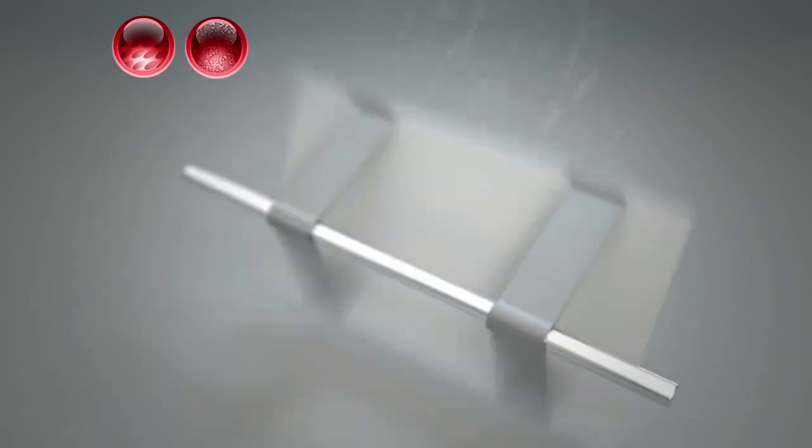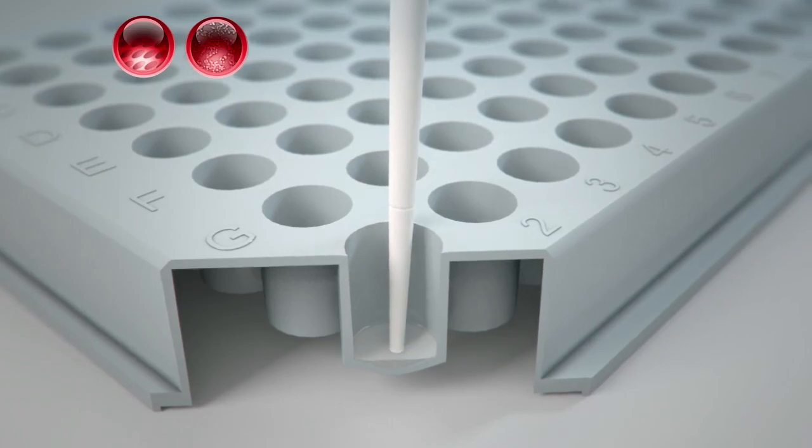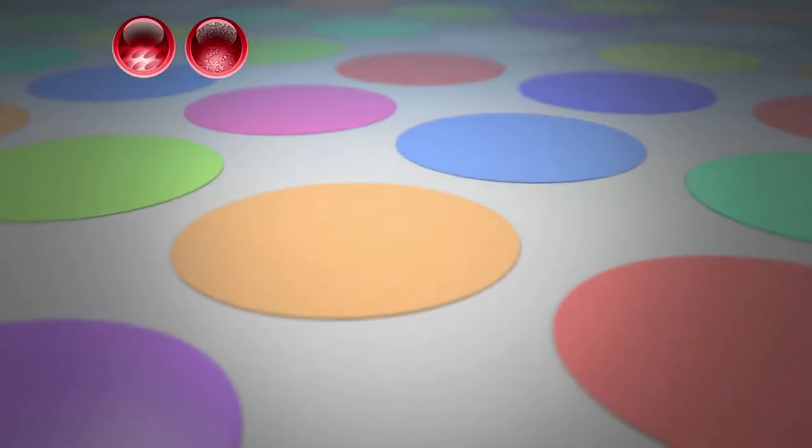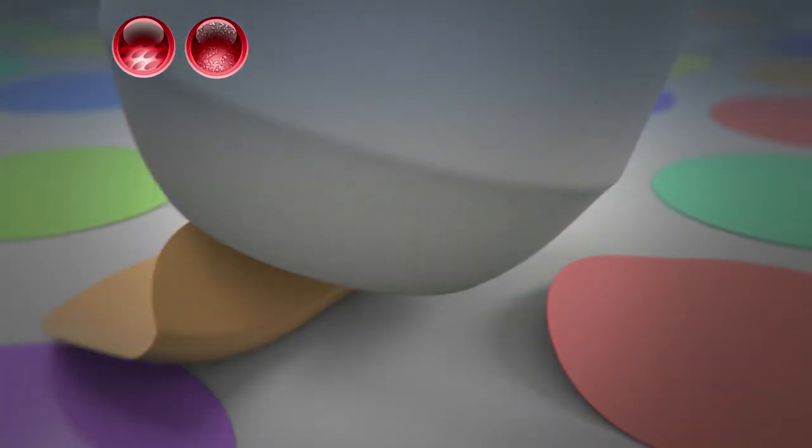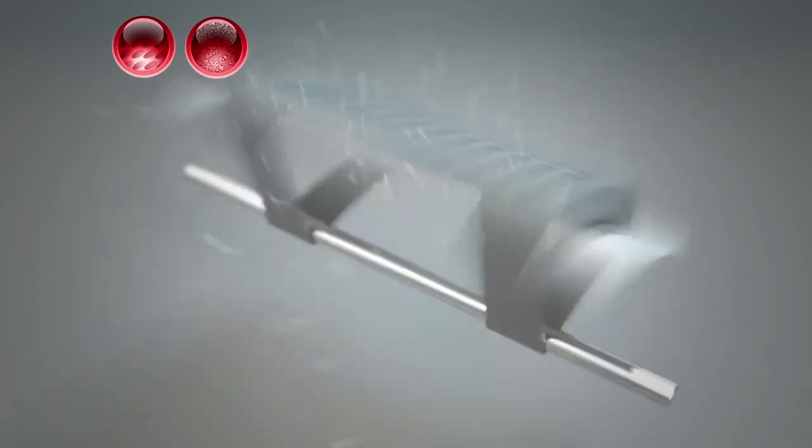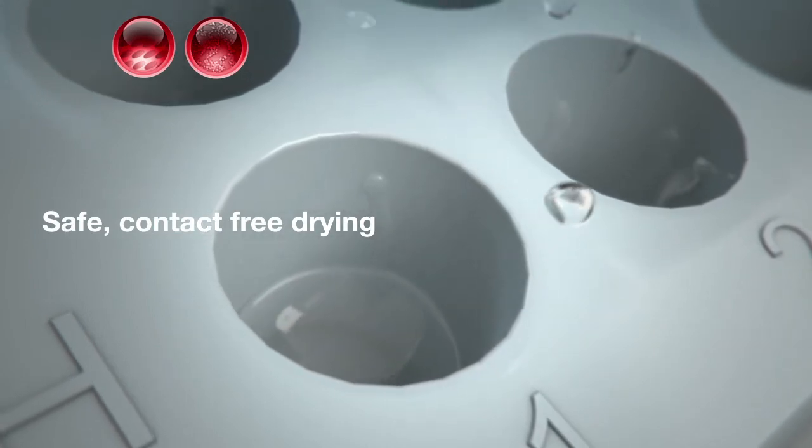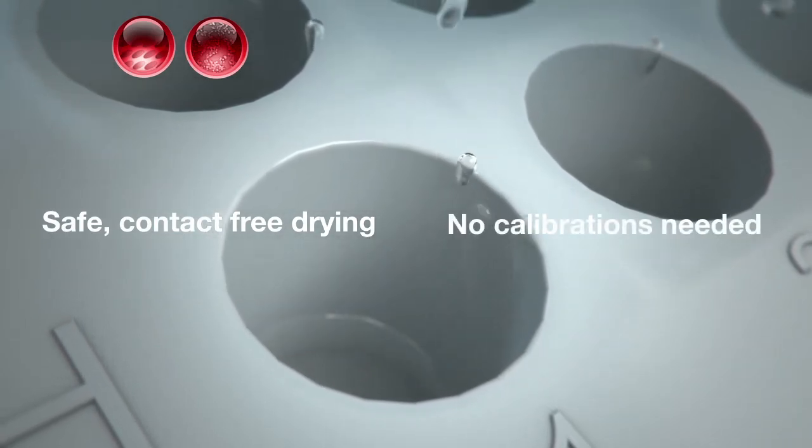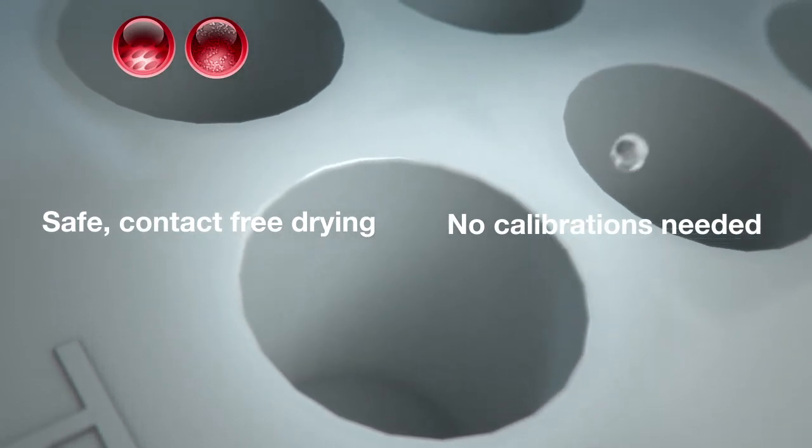The aspiration needles of conventional plate washers pose a threat of disturbing delicate features at the bottom of wells, such as printed protein spots or loosely adherent cells. Because centrifugation is inherently contact-free, plates dry safely without the need to recalibrate aspiration needles so they do not touch well bottoms.